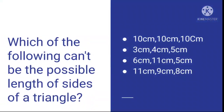Question number 11: Which of the following can't be the possible lengths of sides of a triangle? Your options are: 10 cm, 10 cm, 10 cm; or 3 cm, 4 cm, 5 cm. Look at these sides carefully and answer. Dear viewers, if you need some time to solve this question, you can pause this video — but try to solve it.